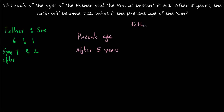The columns are father is to son. Always you have to write father is to son, or mother is to daughter. Even if it is given as son to father, you have to convert it to father to son. At present, let the ratio be equal to x is to y. And after T years, let the ratio become equal to a is to b. So now your table is complete: at present and after T years, the ratio of father to son is x is to y, and a is to b. Then you can directly find out the son's age.